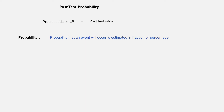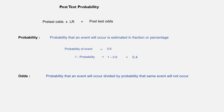In the next step, we need to convert pre-test probability to pre-test odds. To do that, we need to understand the difference between probability and odds. Probability that an event will occur is estimated in percentage or fraction. Suppose probability that an event will occur is 60% or 0.6; probability that the same event will not occur will be 1 minus probability, equal to 0.4 or 40%. On the other hand, odds are calculated by probability that an event will occur divided by probability that the same event will not occur. So if probability is 0.6, odds of the same event will be 1.5.